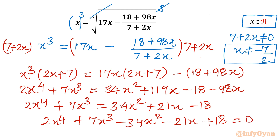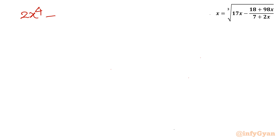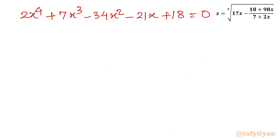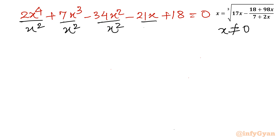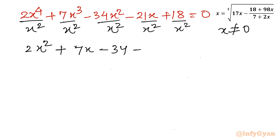If you look at the coefficients, this looks like it will generate a reciprocal equation. We have 2x to the power 4 plus 7x cubed minus 34x squared minus 21x plus 18 equals 0. Since x is non-zero, I can divide both sides by x squared, giving 2x squared plus 7x minus 34 minus 21 over x plus 18 over x squared.